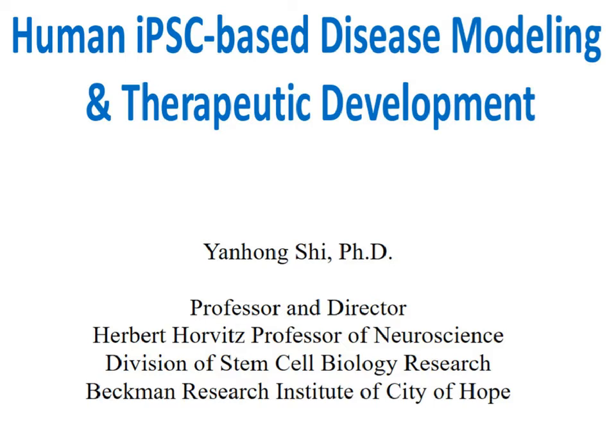Yan Hong is currently a Herbert Horwitz Professor in the Neurosciences and is the Director of the Division of Stem Cell Biology Research at the Beckman Research Institute at City of Hope. She earned her PhD from Northwestern and then did postdoctoral training at the Salk Institute, where she studied nuclear receptors in neural stem cells and neurogenesis.